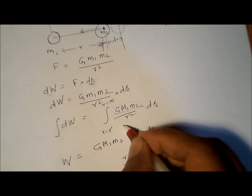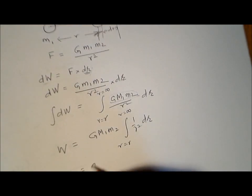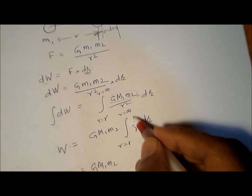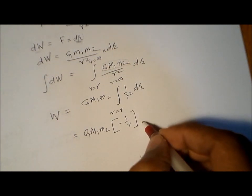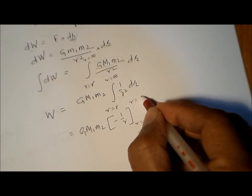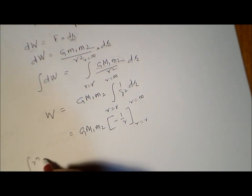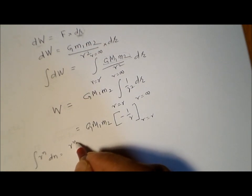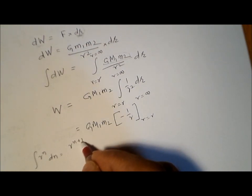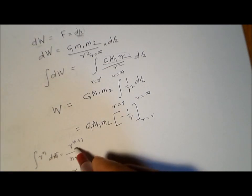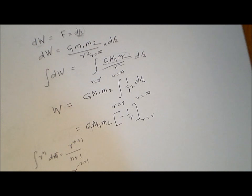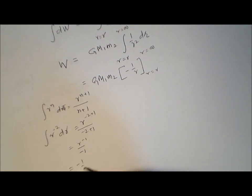We need to evaluate the integral of 1 over r squared, which equals minus 1 over r, as r changes from r to infinity. Using the power rule: the integral of r to the power of minus 2 dr equals r to the power of minus 2 plus 1 divided by minus 2 plus 1, which is r to the power of minus 1 divided by minus 1, giving minus 1 over r.